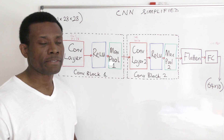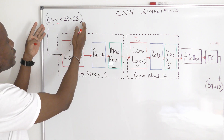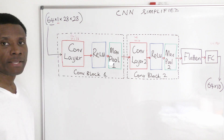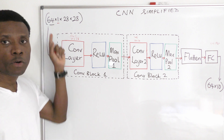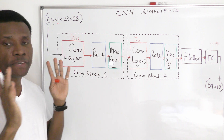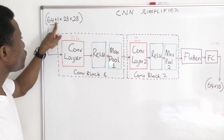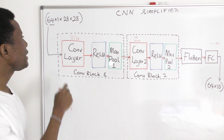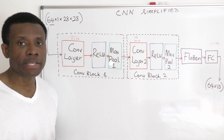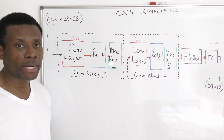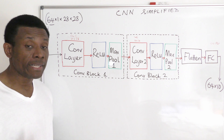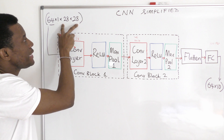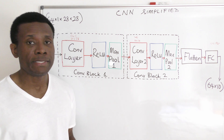This is CNN simplified. We have an input image of 64 by 1 by 28 by 28. The first number, 64, represents the batch size — the number of images you are feeding into the network at a given time. The second number represents the channel. A channel of 1 represents a grayscale image, i.e., a black and white image. For a colored image we have a channel of 3, representing the RGB values. The 28 by 28 represents the width and height of the image in pixels.